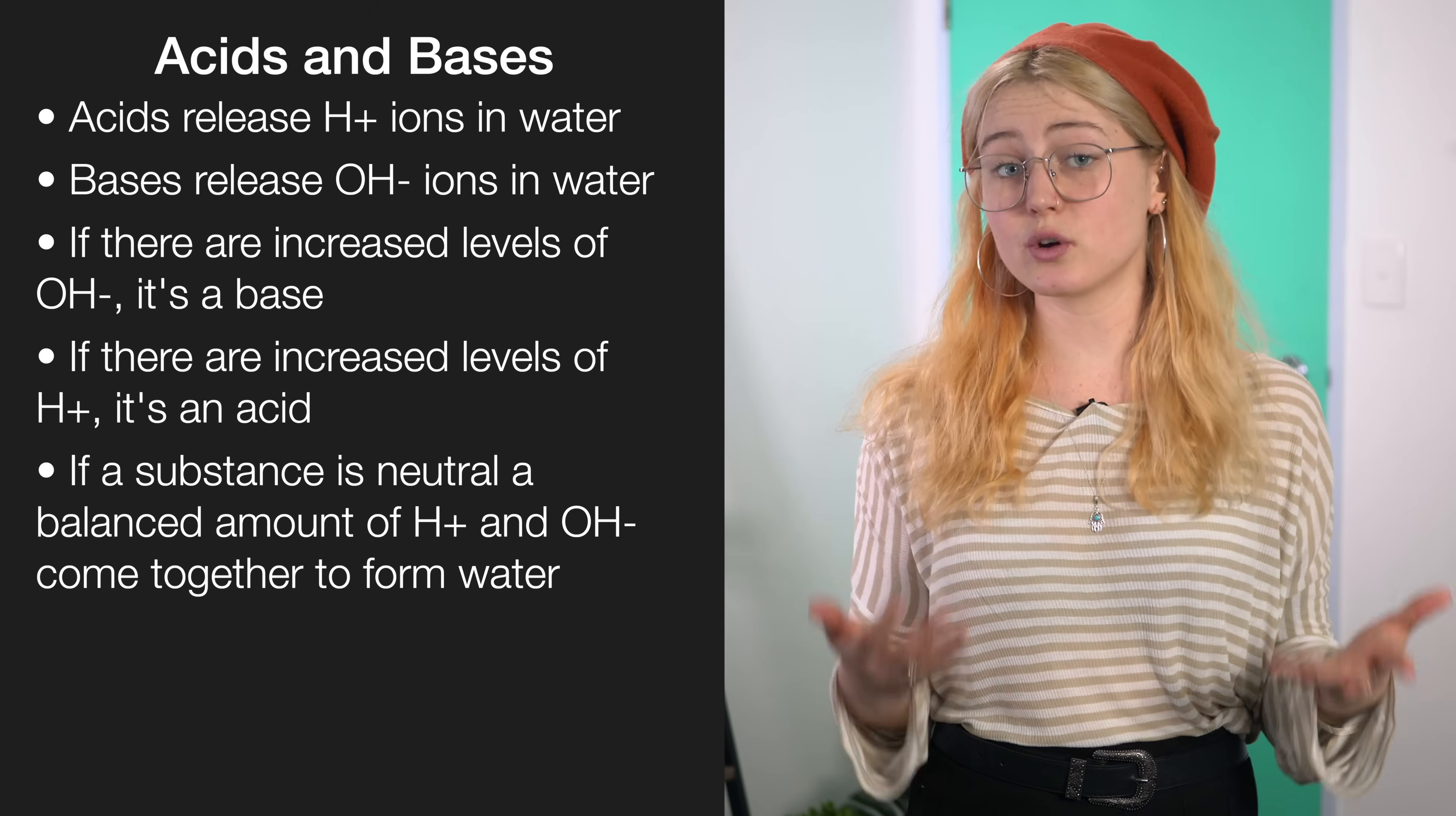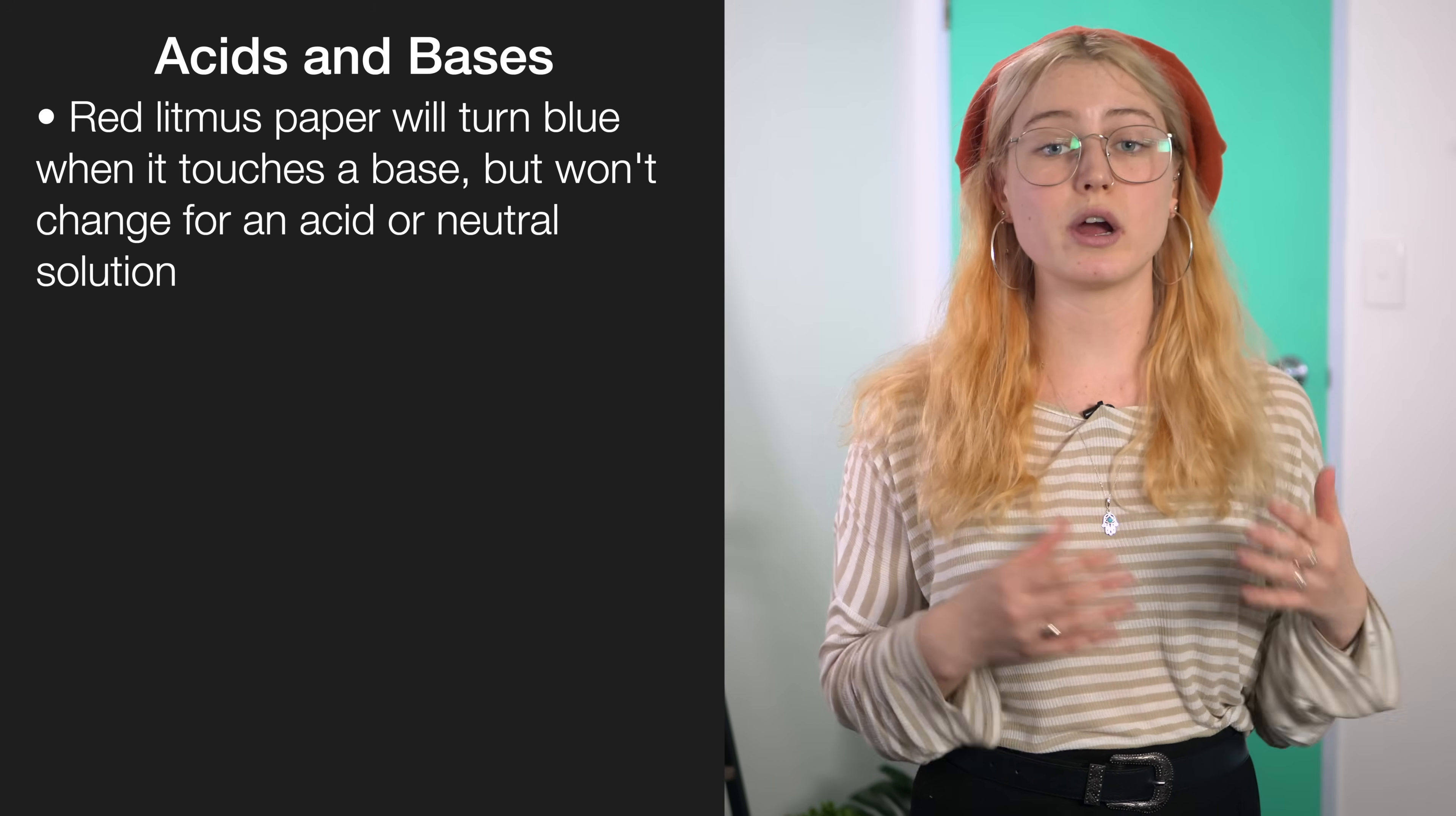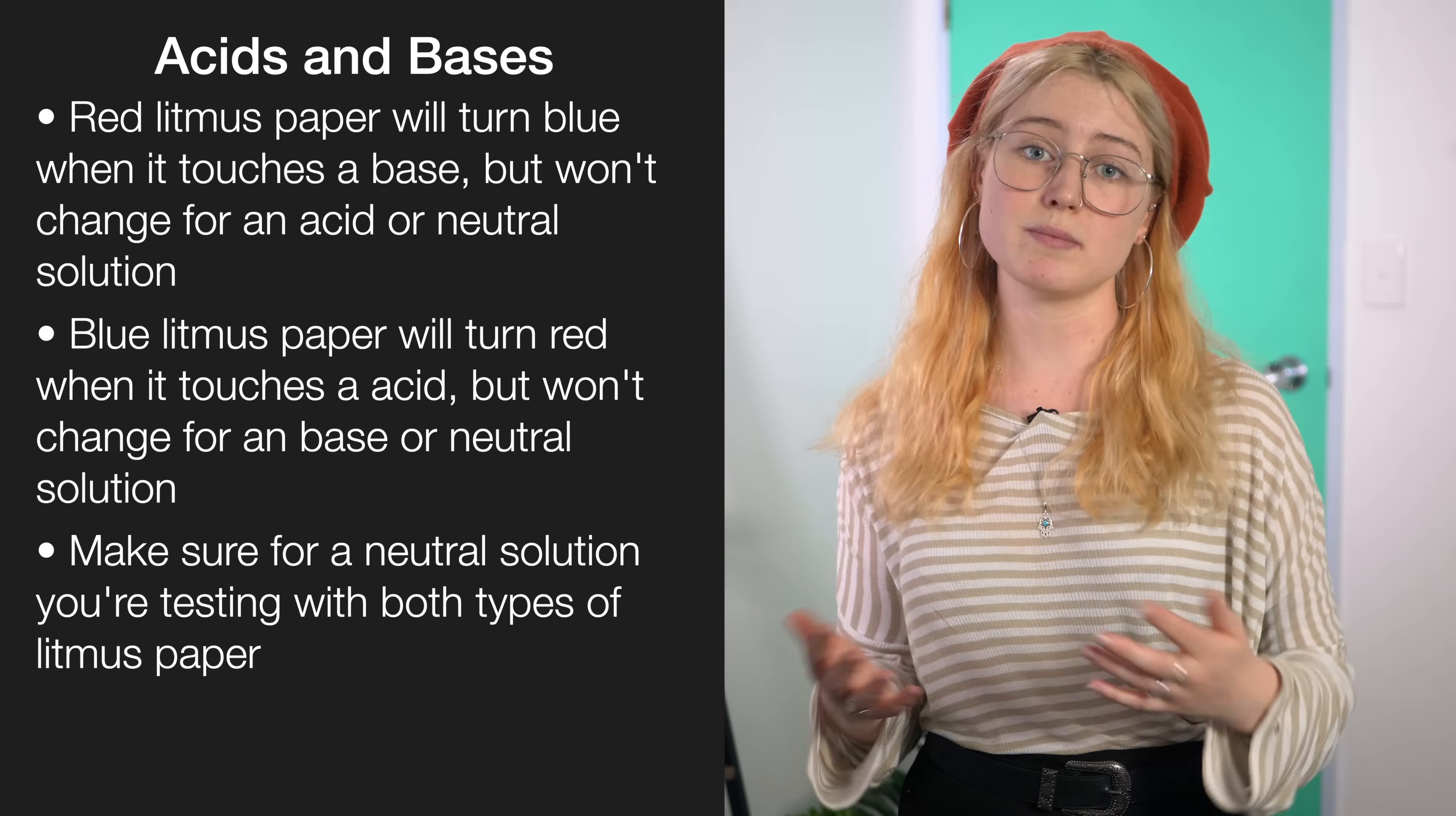Lastly, you're going to get a lot of questions probably pop up about identification of an unknown solution and you're going to have to use litmus paper to do so. Now bear in mind that red litmus paper will change blue when it hits a base but it won't change for an acid or a neutral substance, and blue litmus paper will turn red when it touches an acid but won't change color in a base and won't change color for a neutral solution. So when identifying solutions, make sure that for a neutral substance you're testing with both kinds of litmus paper.